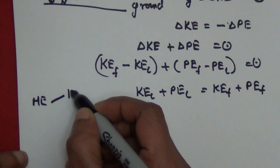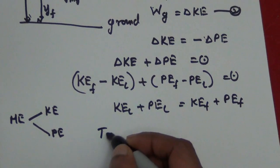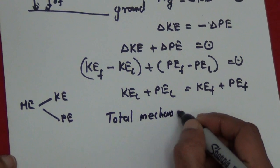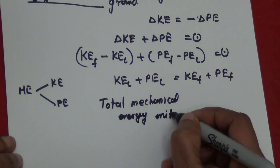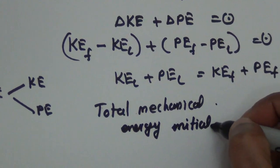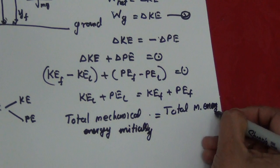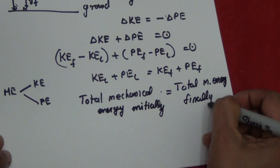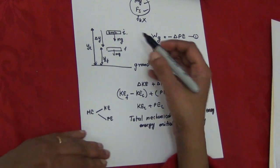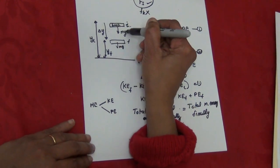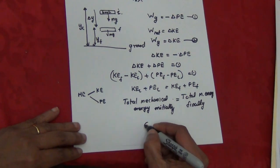Mechanical energy means kinetic energy and potential energy — no other energies. So the total mechanical energy initially equals the total mechanical energy finally. This is called conservation of energy.